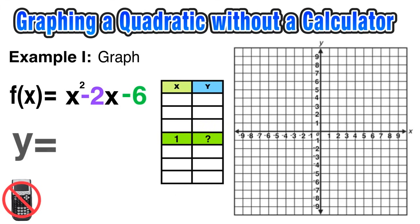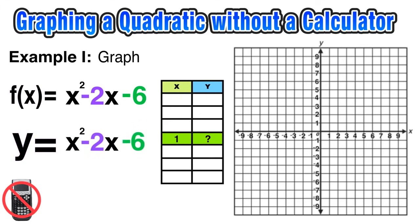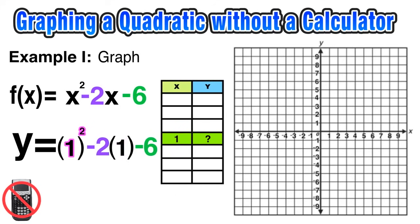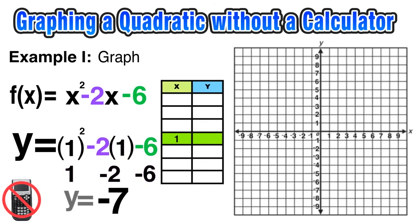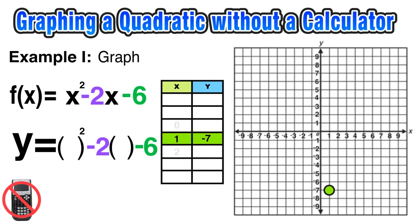Now we use that value of positive 1 to plug in and find y. Remember that f of x equals and y equals mean the same thing, so I rewrite the function in y equals form and replace the x's with 1. Evaluating: 1 squared is 1, negative 2 times 1 is negative 2, then bring down the negative 6. So 1 minus 2 minus 6 equals negative 7. The vertex is at (1, negative 7), and I can go ahead and plot that point.